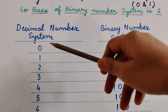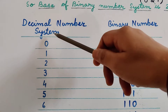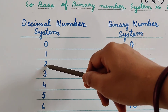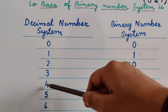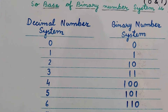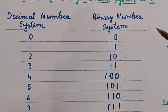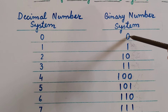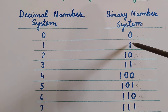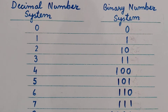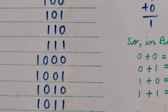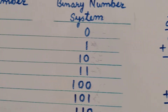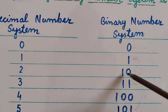In the decimal system, adding 1 to 0 gives 1, adding 1 to 1 gives 2, and so on. The same pattern applies to binary: adding 1 to binary 0 gives 1. When 1 is added to binary 1, as we have seen, 1 plus 1 gives 10 in binary. So the next digit after 1 is 10.